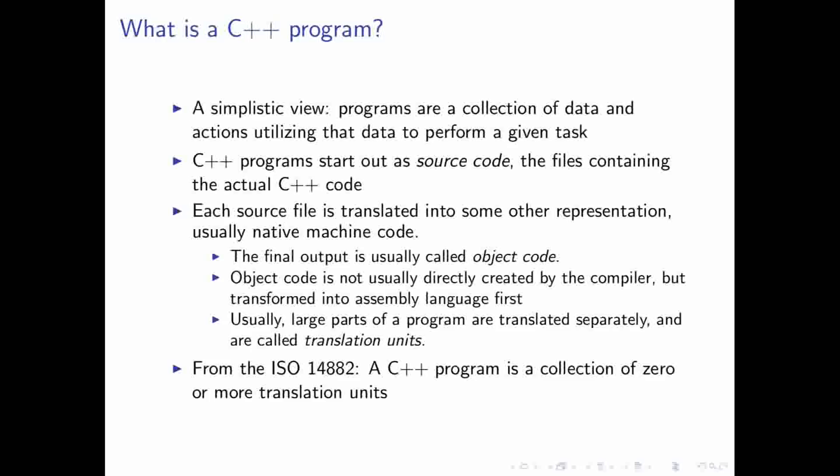Basically, the way you would go about this is you would start out writing C++ source code, which is the code that you write, and then let the compiler actually handle the rest, and put everything together. And so, each source file that you have will be translated into some other representation, eventually, usually native machine code.